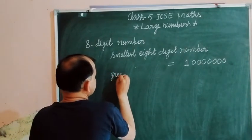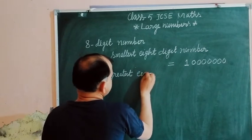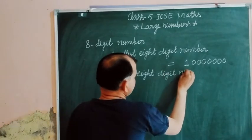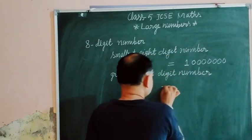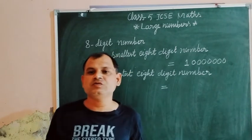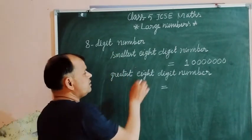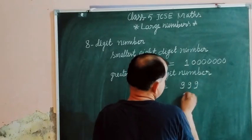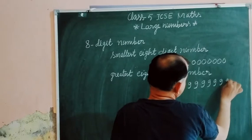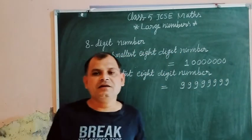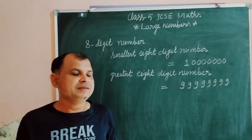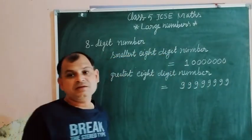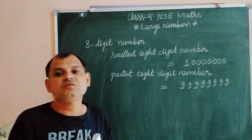Now the greatest 8-digit number — how can we write it? You know that the greatest digit is 9, so write 9 eight times, because we are making the greatest 8-digit number. So write 9 eight times: 1, 2, 3, 4, 5, 6, 7, 8. This is the method of forming the smallest or greatest number.